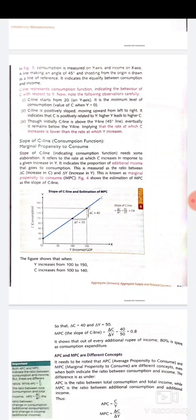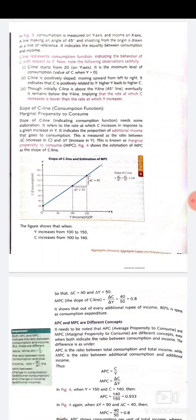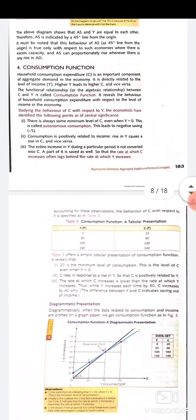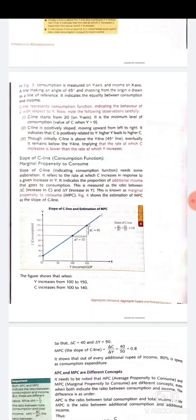Average propensity to consume (APC) and marginal propensity to consume (MPC) are different concepts. APC shows the relationship between total consumption and total income, whereas MPC shows the relationship between change in consumption and change in income. From the table, APC equals 140 divided by 150, while MPC equals 40 divided by 50. The slope of the consumption function is indicated by the marginal propensity to consume.